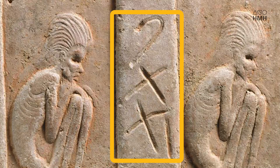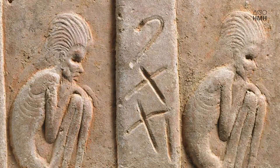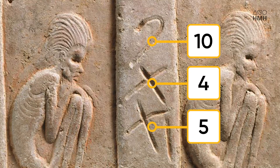I had no idea. I had to look it up when I got home, and I learned they were numbers. The number is written with a Karasthi script. Going from bottom to top are the symbols for 5, 4, and 10. The tiles were numbered so that they could be put in the right place, and this is tile 19.